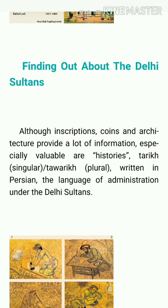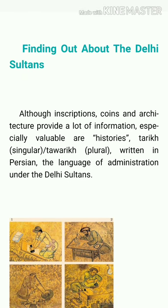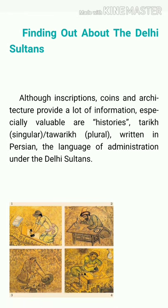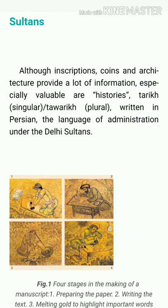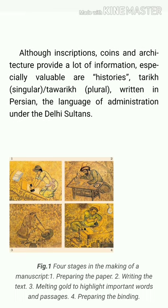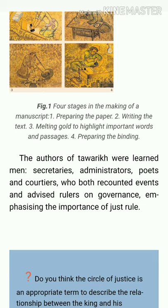The first topic of the chapter is finding out about the Delhi Sultans. Although inscriptions, coins, and architecture provide a lot of information, especially valuable are histories — Tawarik — written in Persian, the language of administration under the Delhi Sultans. Jo inscriptions hain, coins hain, aur architecture hai, unse bahut saari information milti hai. Tawarik ke baare mein pata lagta hai, jo Persian mein likhi jaati thi, jo language wahan ki administration ki hoti thi.